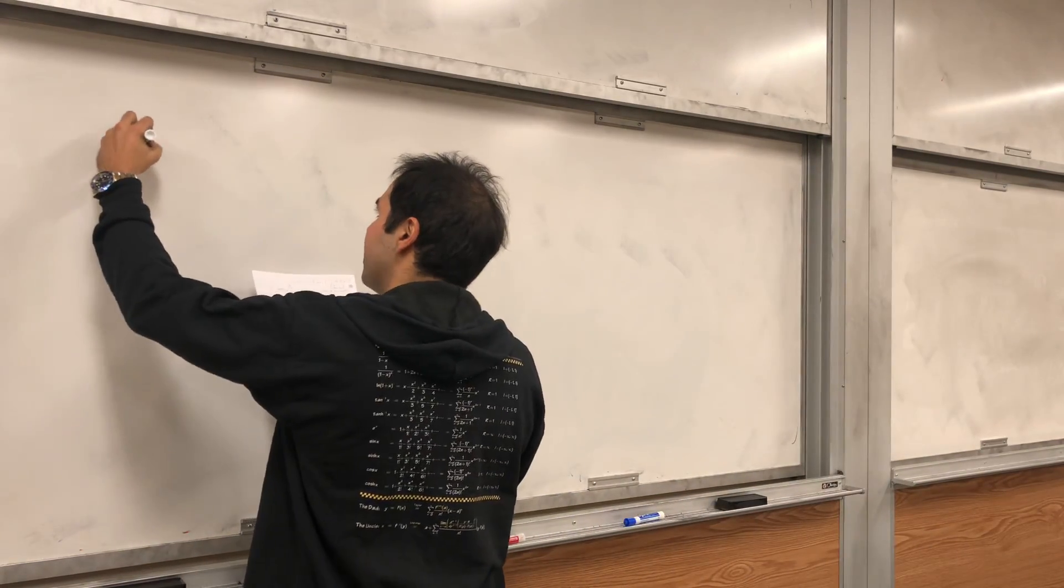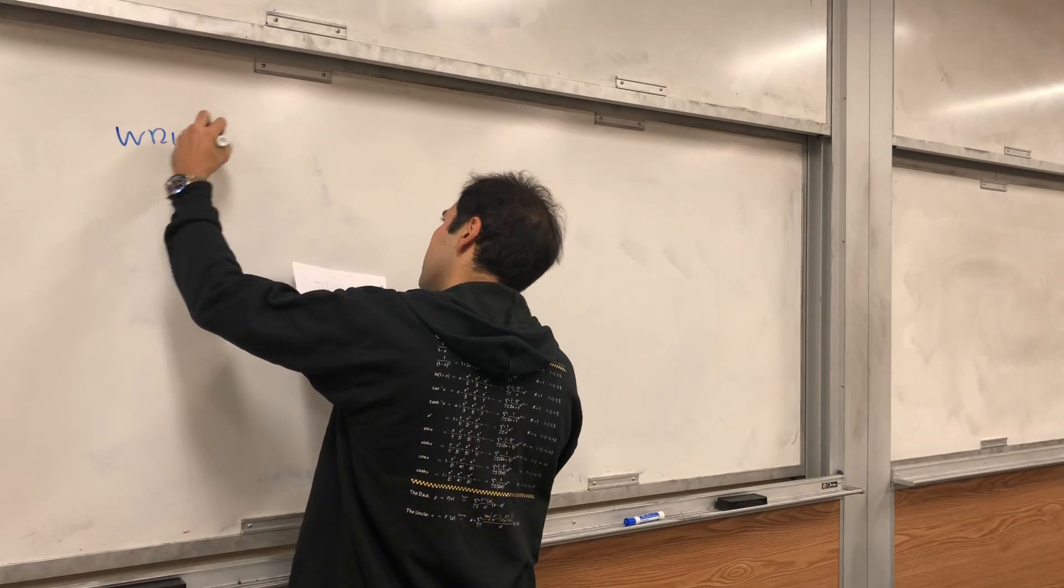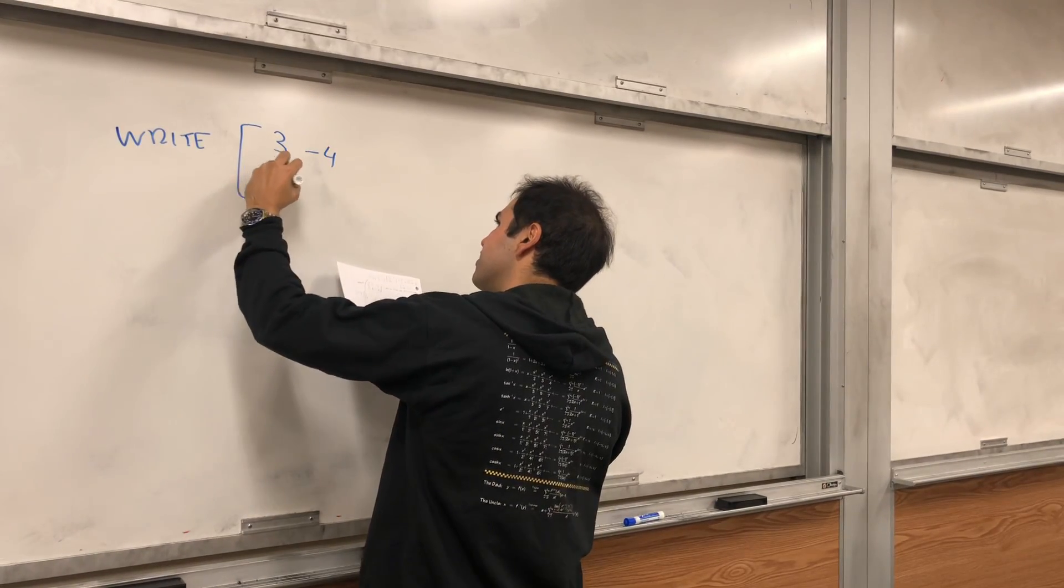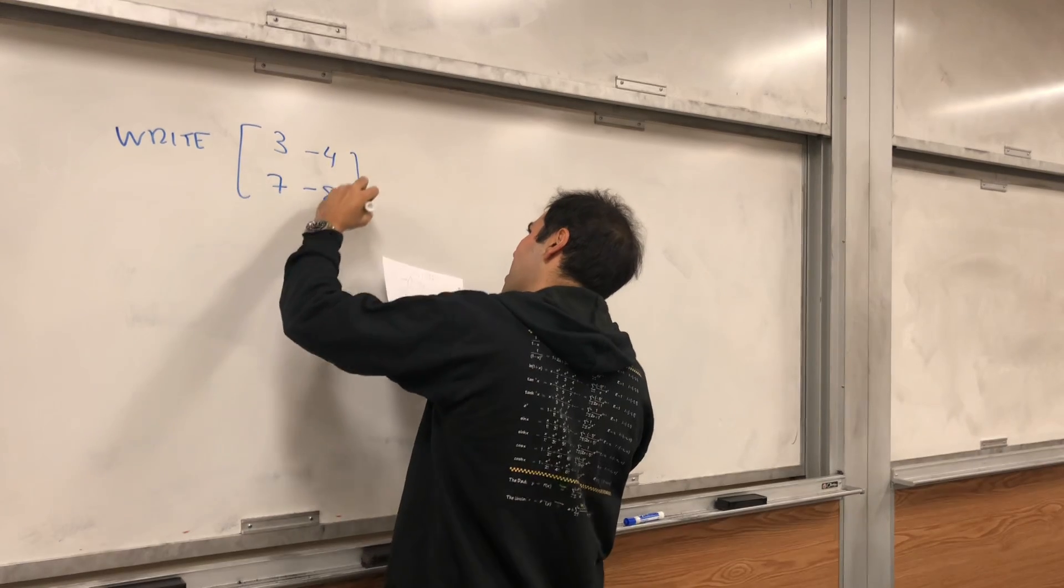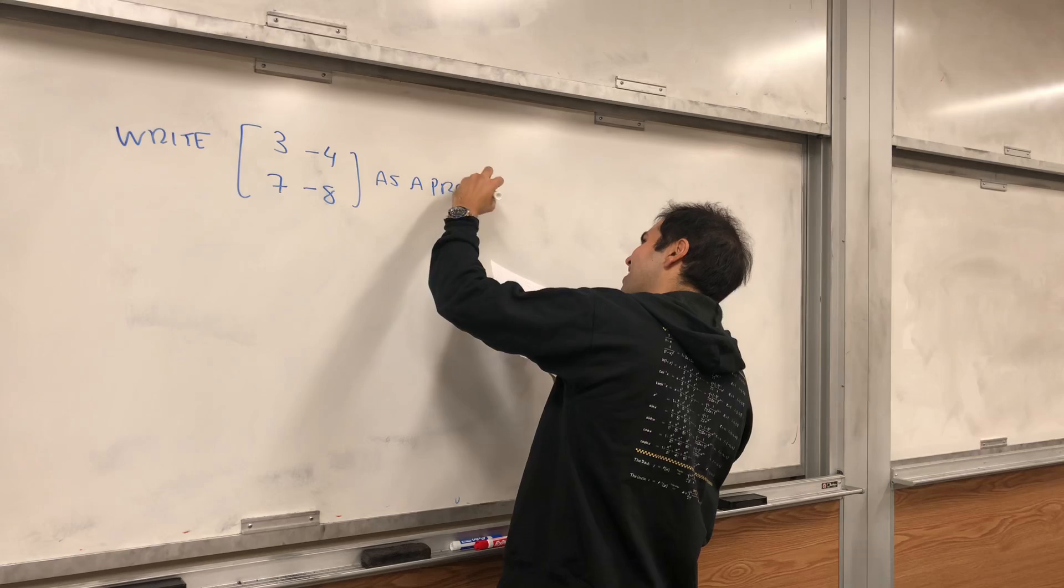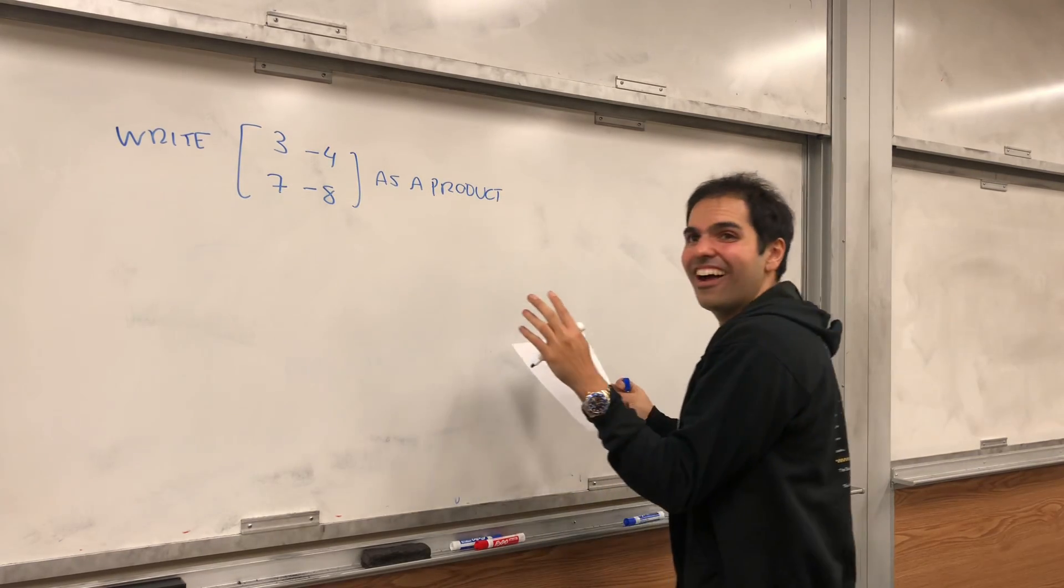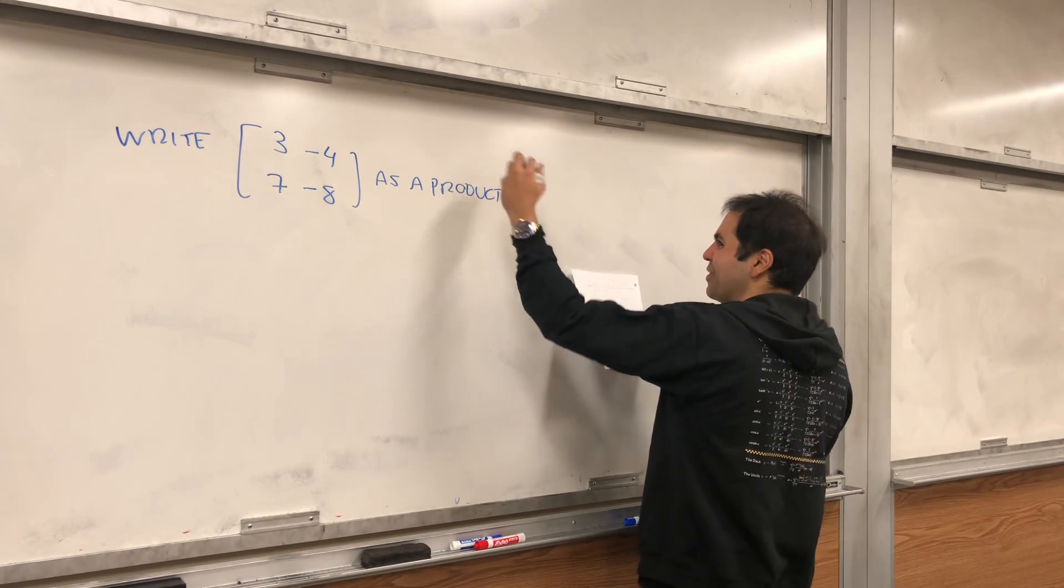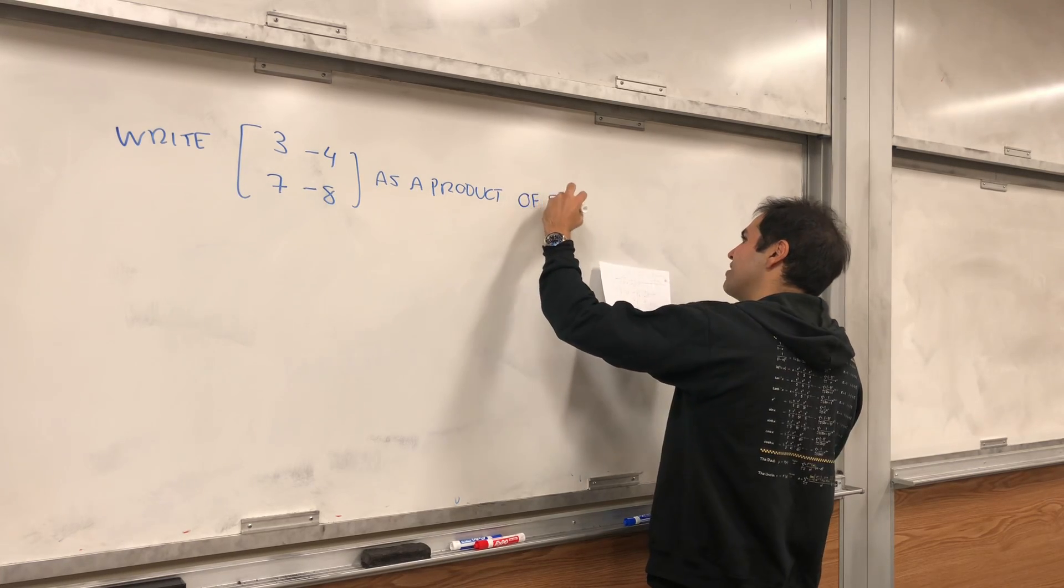So let's write 3 minus 4, 7 minus 8 as a product, the linear algebra version of the Prada Lu, the product of elementary matrices.